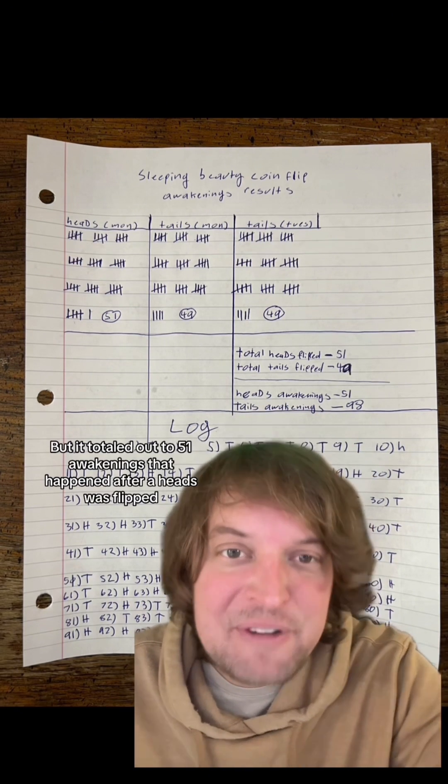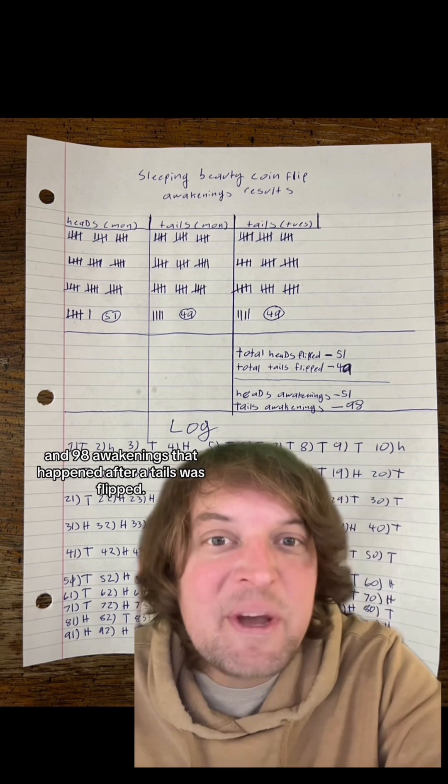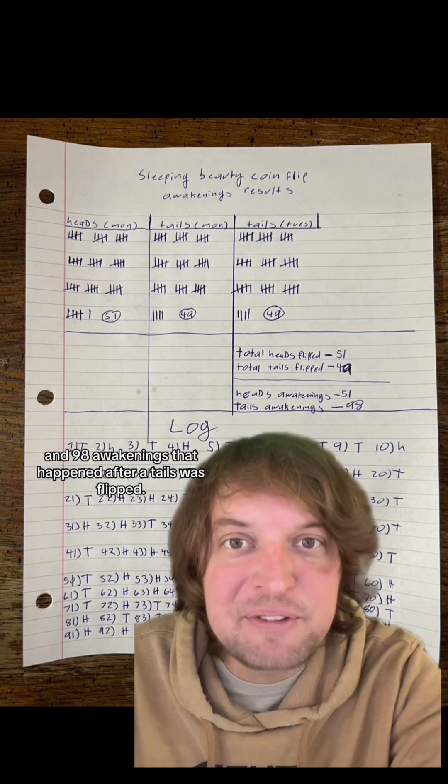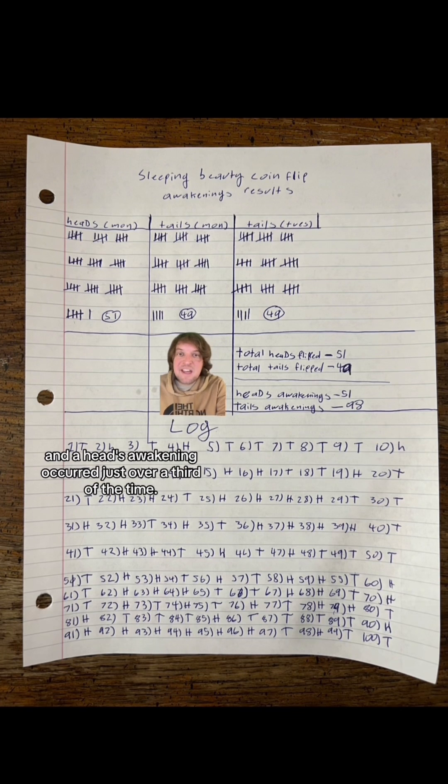But it totaled out to 51 awakenings that happened after a heads was flipped and 98 awakenings that happened after a tails was flipped. So a tails awakening occurred just under two-thirds of the time and a heads awakening occurred just over a third of the time.